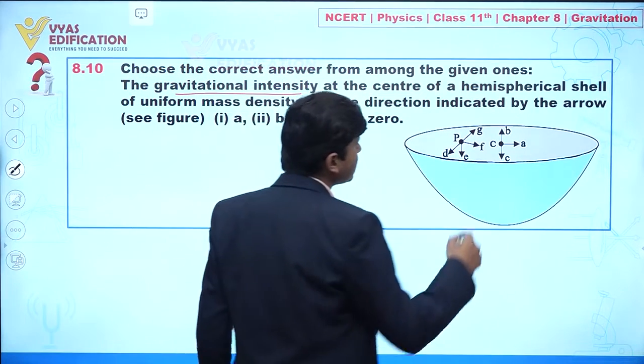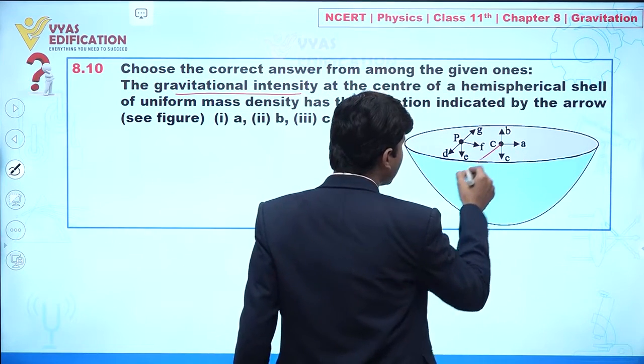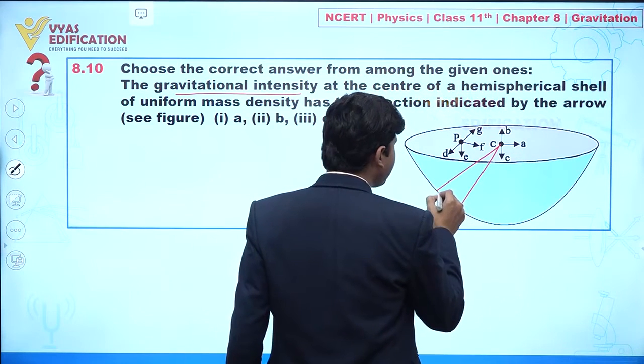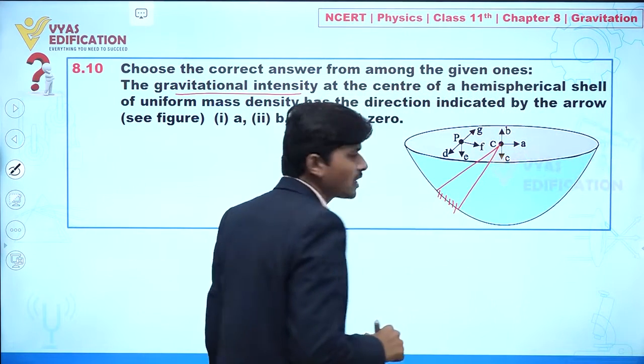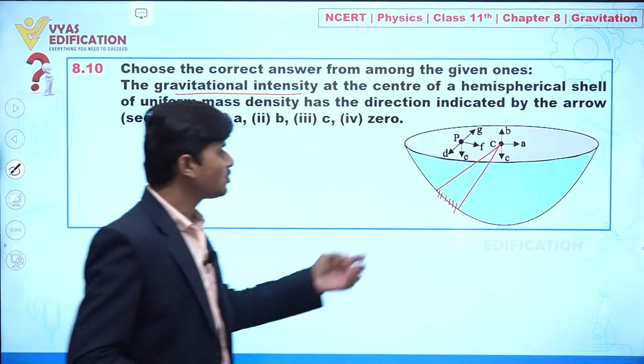Now concentrate here. Let's suppose I take a very small element. Listen carefully what I am saying to you. Let's suppose I am taking this small element, and now we can say due to this small element we will find the direction of gravitational intensity in this direction.